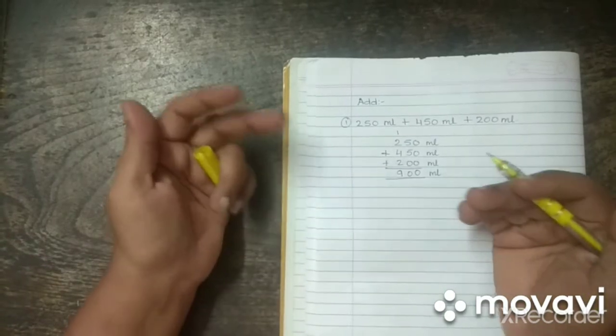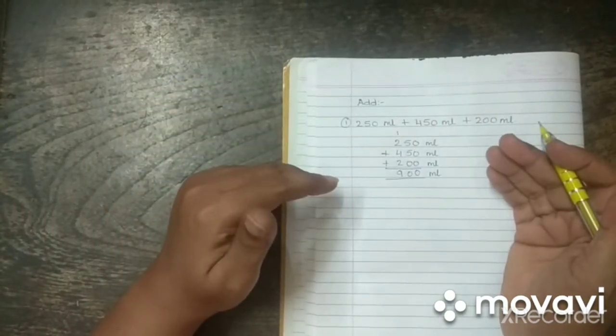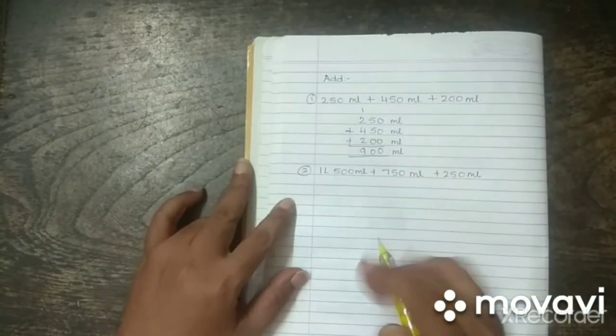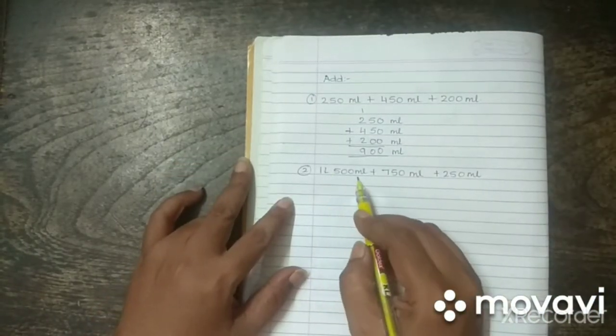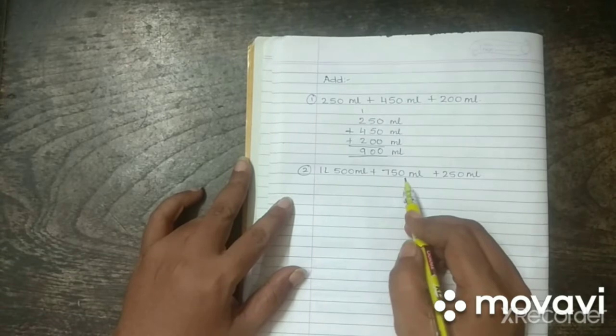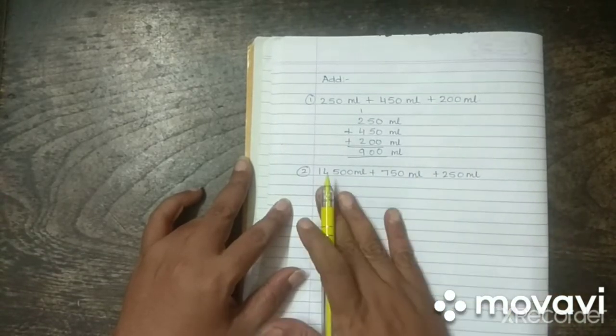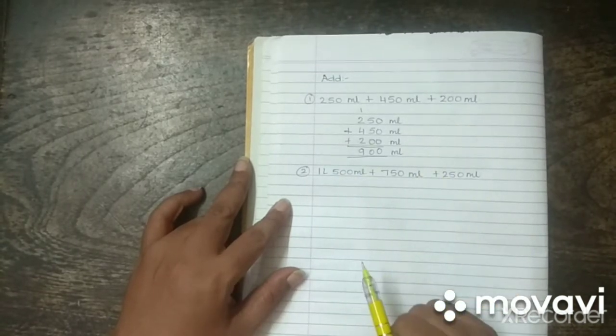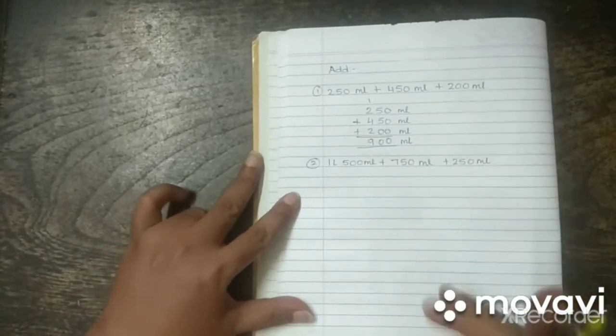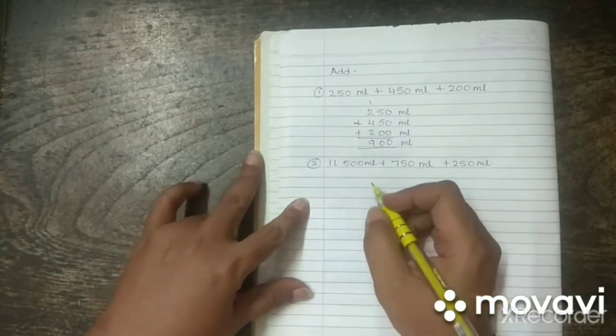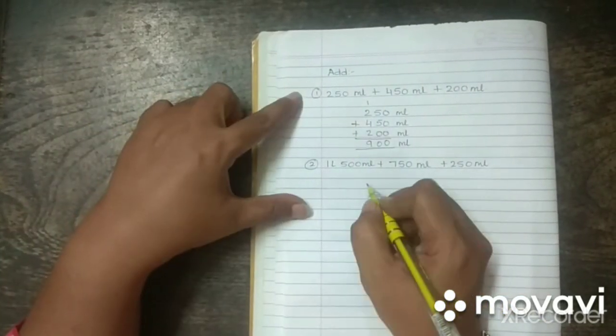Now, we will take up liters and milliliters together and try to add them up. The next sum is 1 liter, 500 ml plus 750 ml plus 250 ml. So, this has liters and milliliters together. Placement, remember, hundreds ke neche hundreds and that all. I don't need to remind you this every time. Okay?